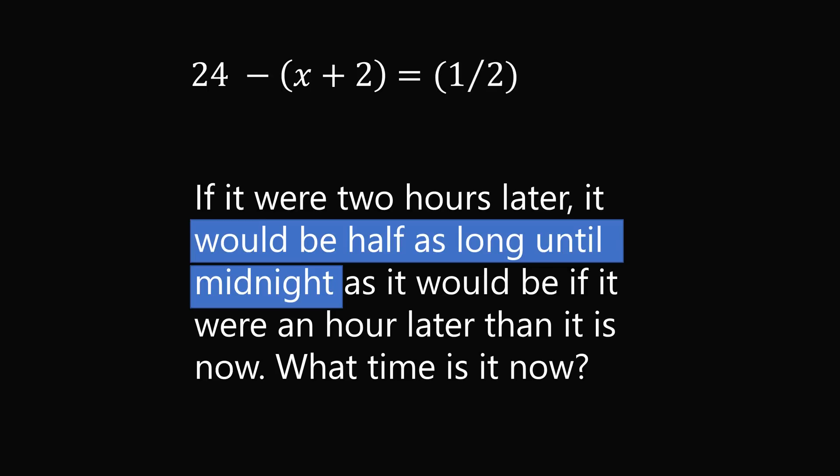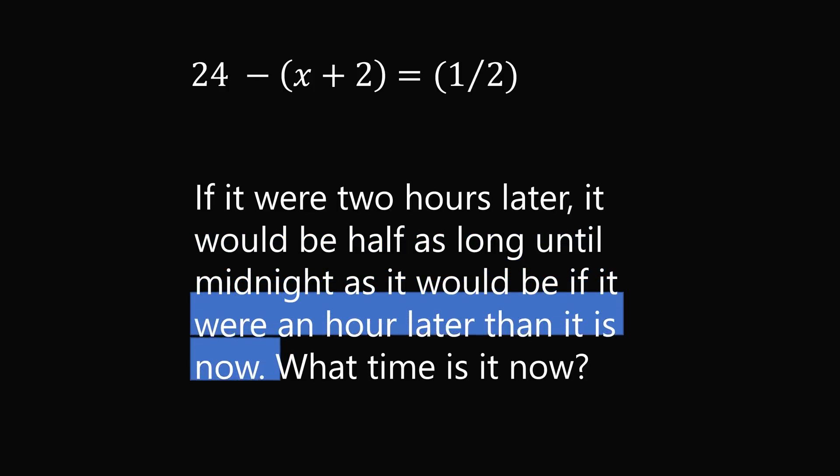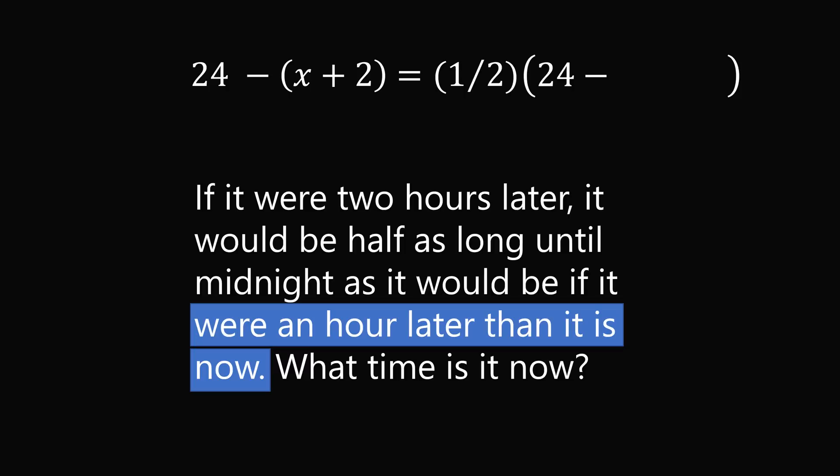At that time it would be half as long until midnight. So we want to set this equation to half as long as another quantity of time. That will be if it were one hour later than it is now. So the time to midnight one hour later is x plus 1.